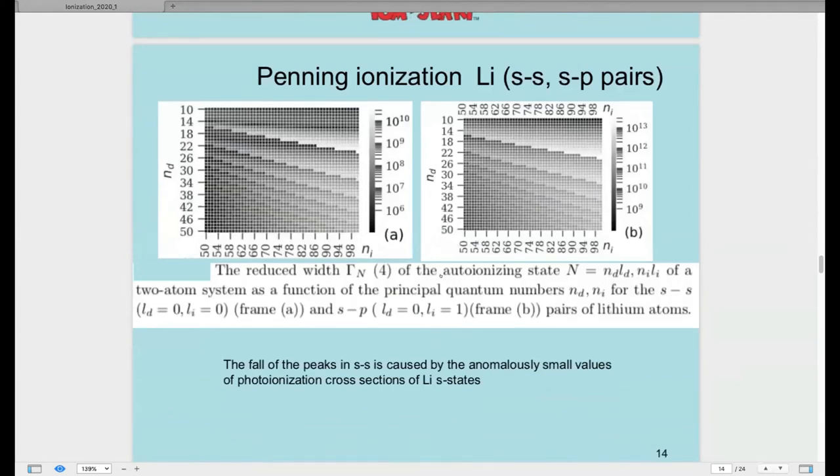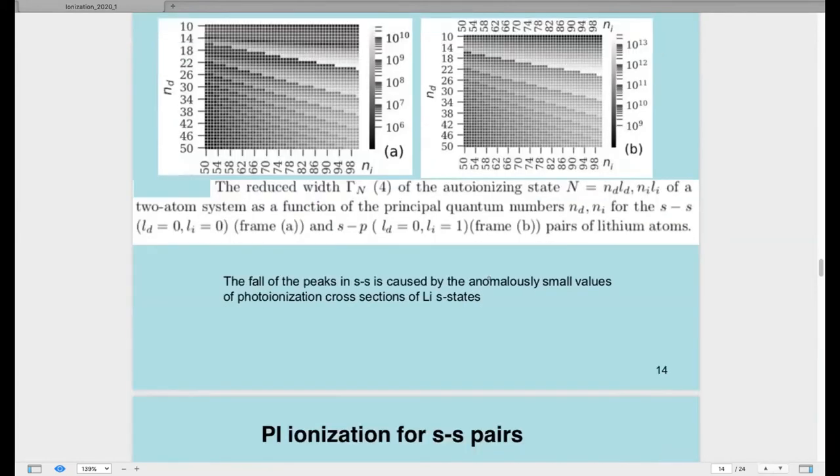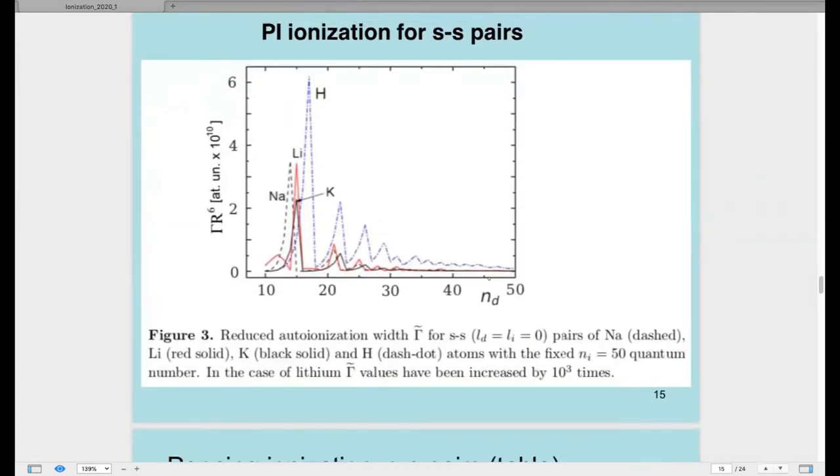In the next slide we calculate for lithium as examples for s-s and s-p pairs. In this figure we see autoionization weights for Penning ionization shown as how the autoionization width of atomic pairs depends on the principal quantum numbers n_e and n_d of interacting atoms. The black area corresponds to small values and the white area to large autoionization widths. The fall of the peaks in s-s is caused by the anomalously small values of photoionization cross-sections of lithium s-s states. Next slide we see for Penning ionization for s-p pairs a little bit different graph.